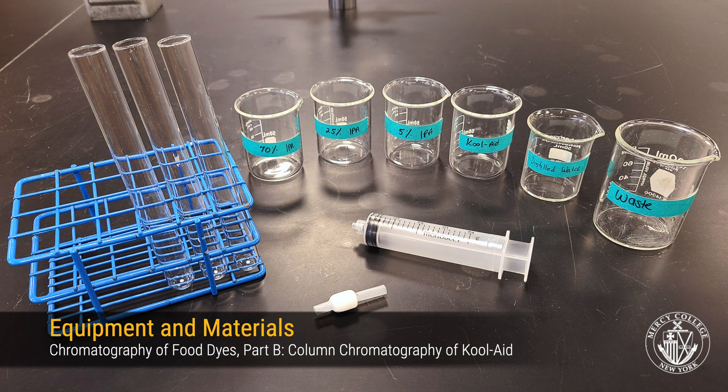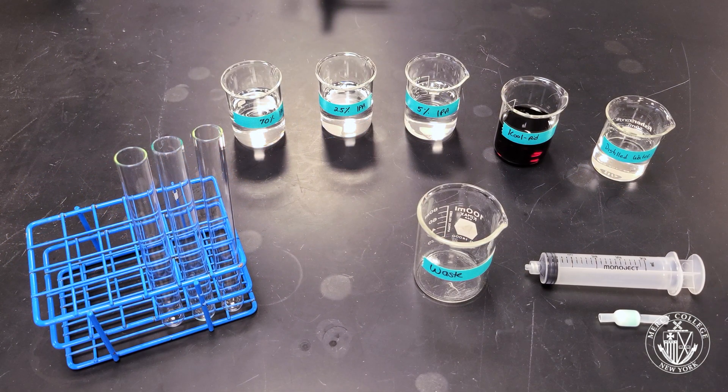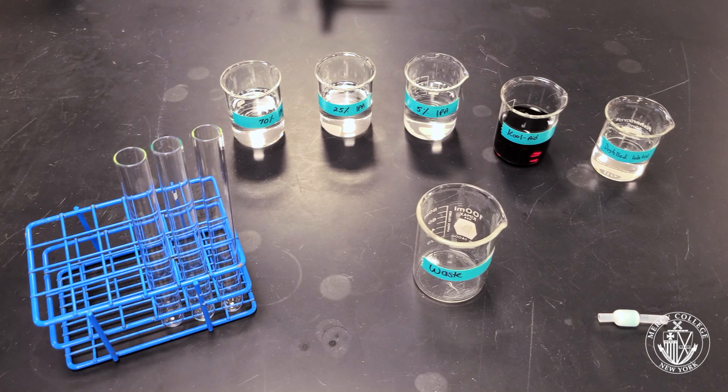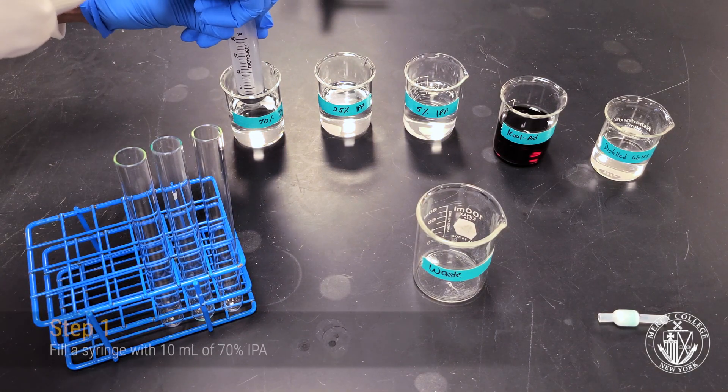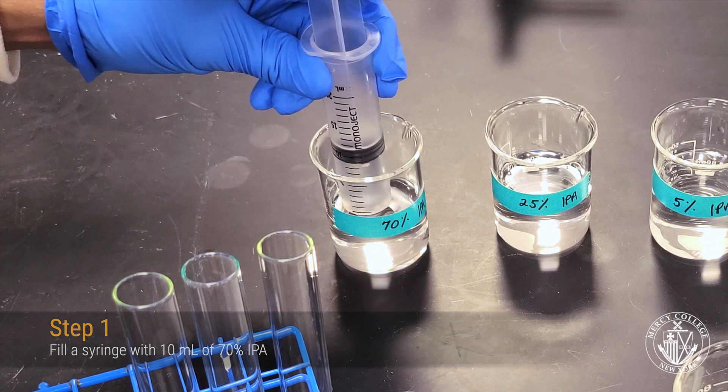Here are some materials that we're going to make use of in Part B of the experiment. Step 1 is to take your syringe and fill it with 70% isopropyl alcohol. We're going to use the isopropyl alcohol to clean our column prior to use.